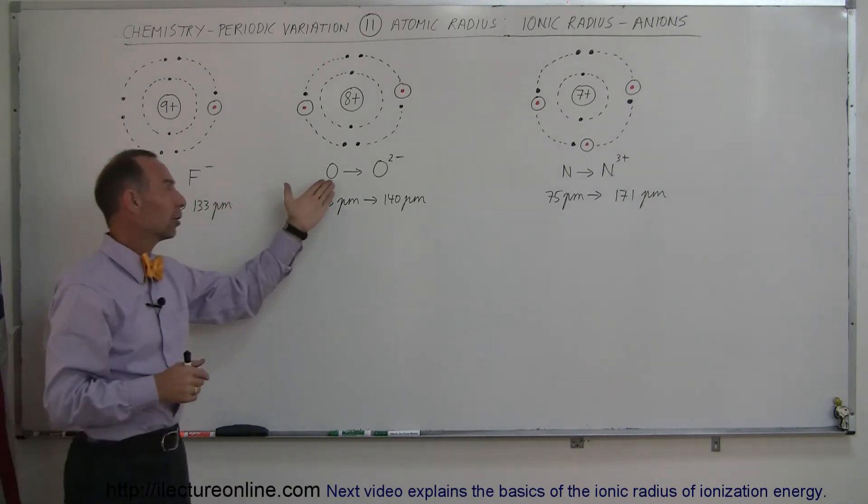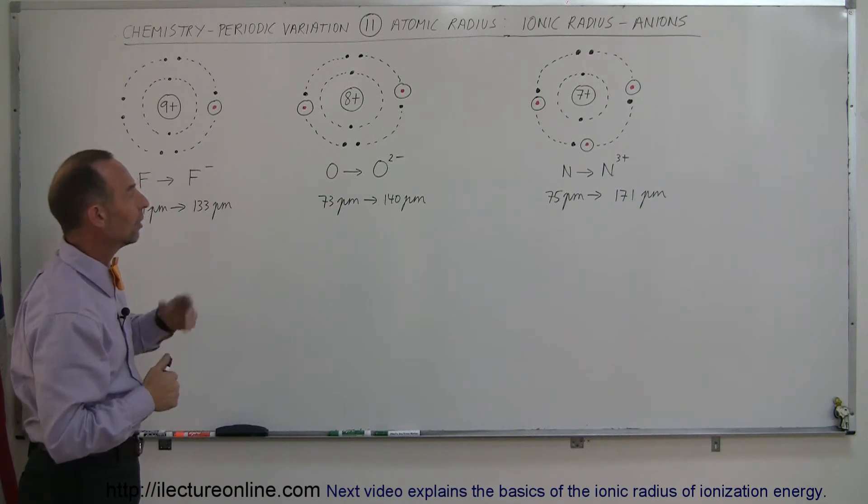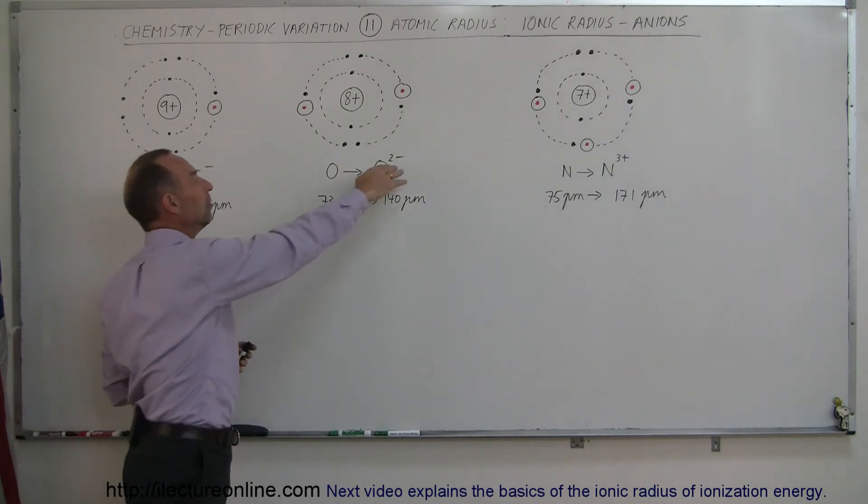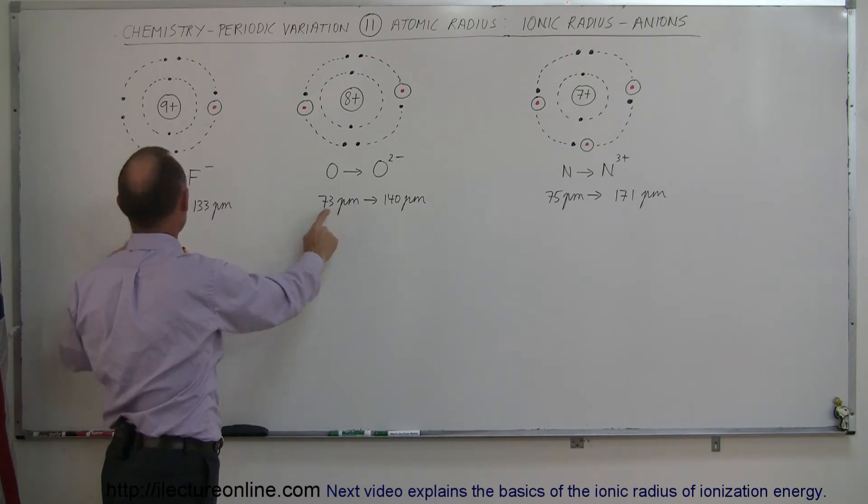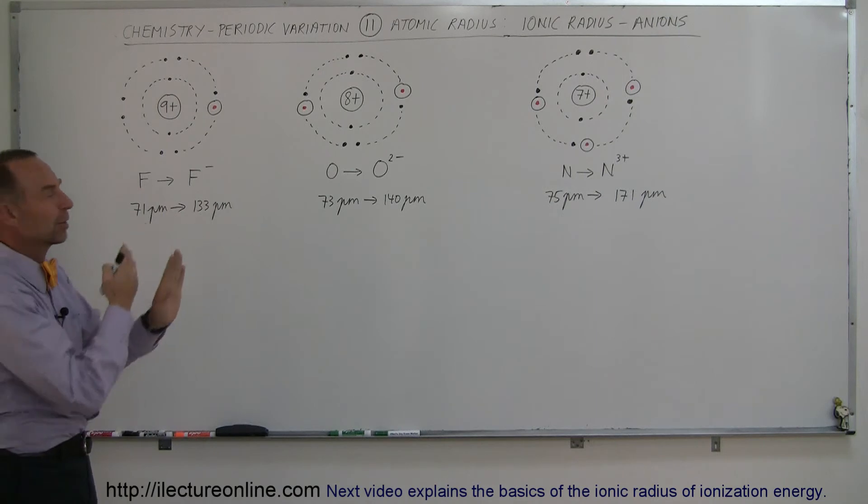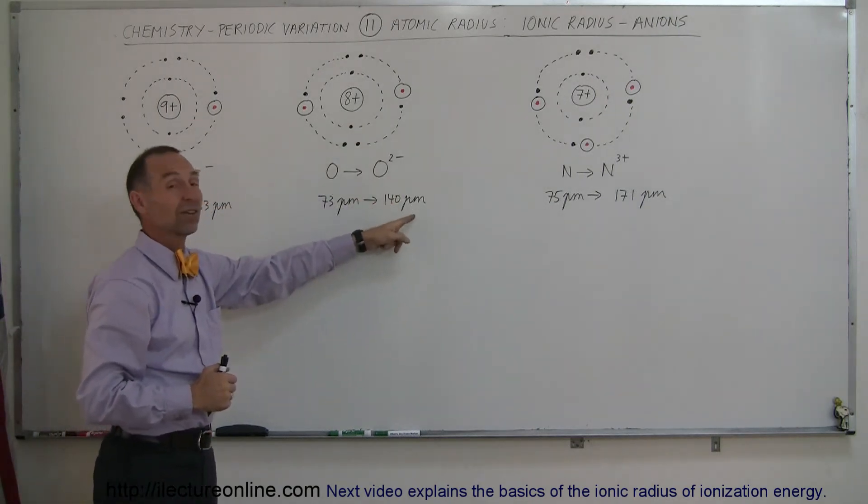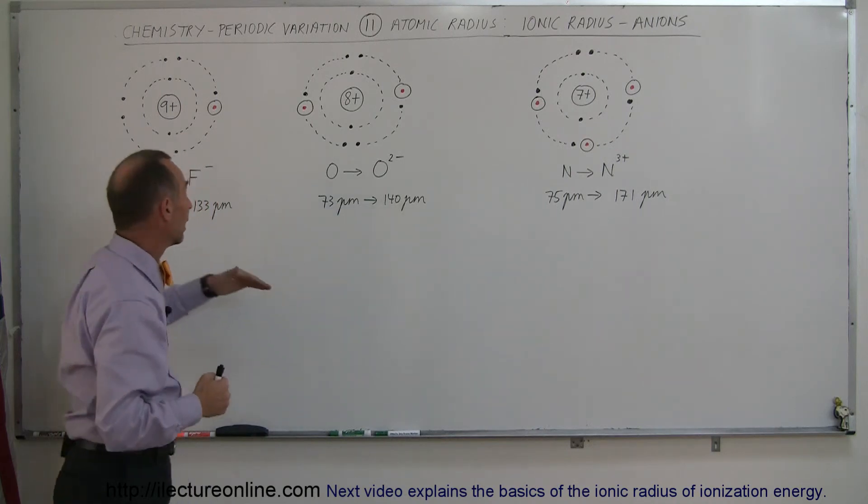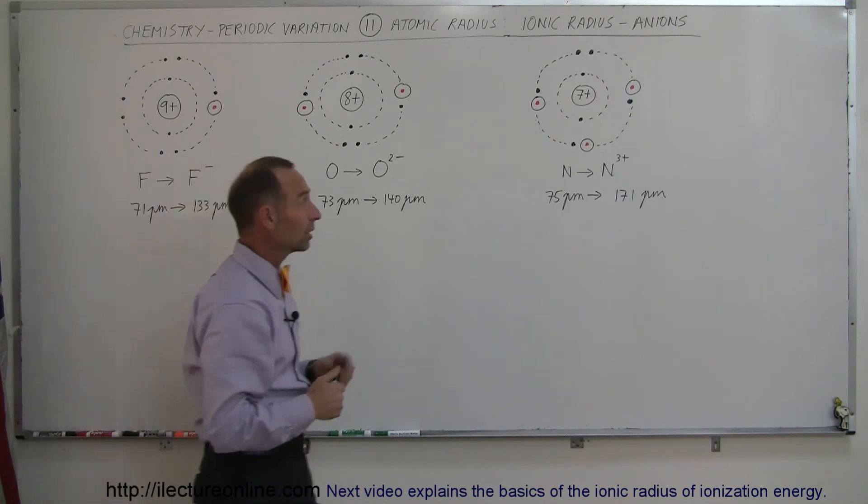If we now go to oxygen and looking at the double ionized oxygen anion, which is two negative, you can see that from an original size that was slightly larger than the size of fluorine because it was a little bit to the left on the periodic table. But when it became an ion with two additional electrons, the size increase was even greater, and it went from 73 to 140 picometers.